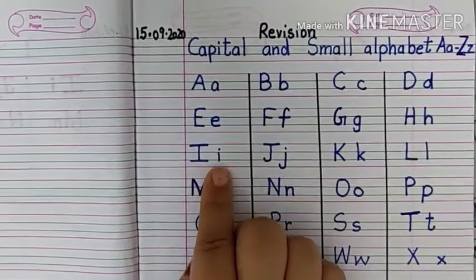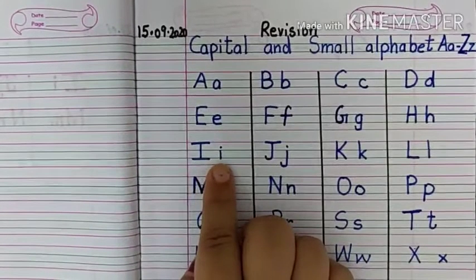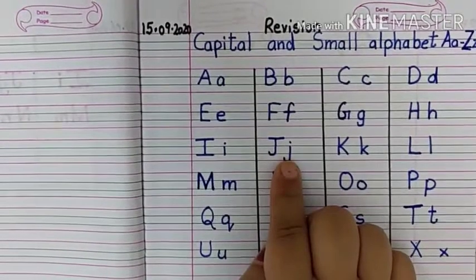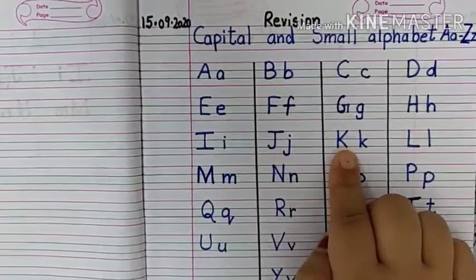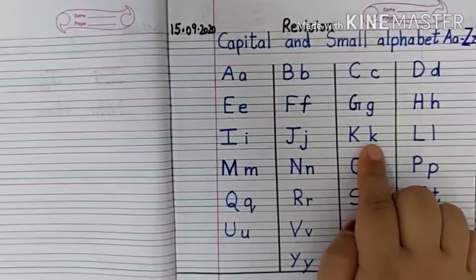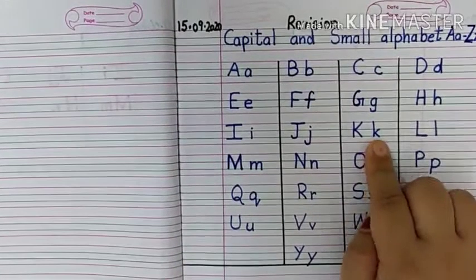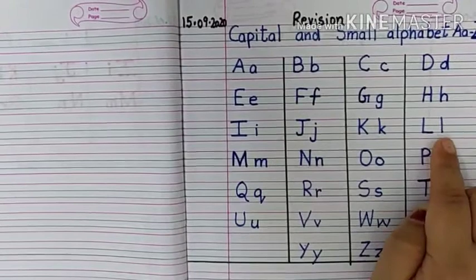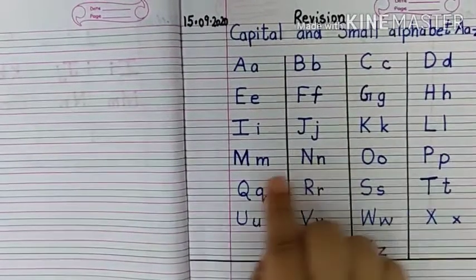Next, capital K, small k, K says K. Next, capital L, small l, L says L.